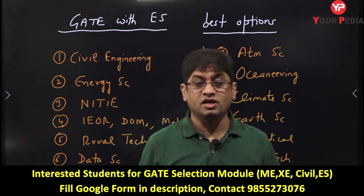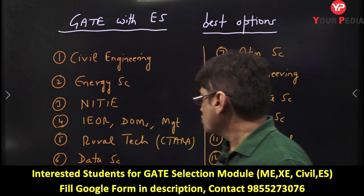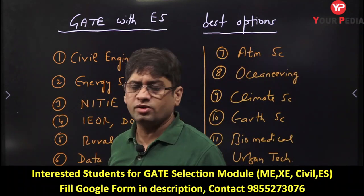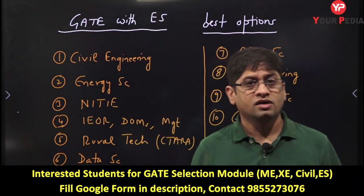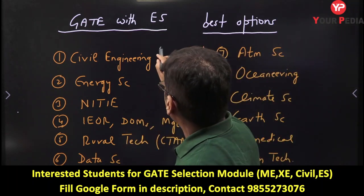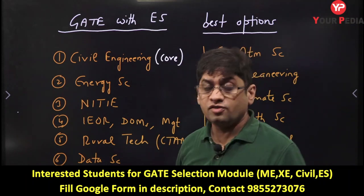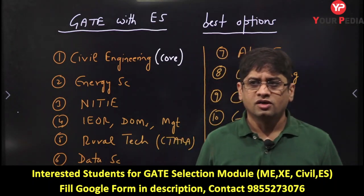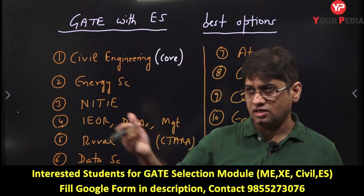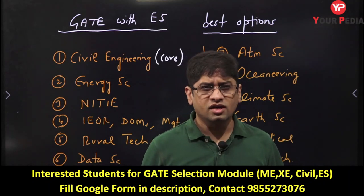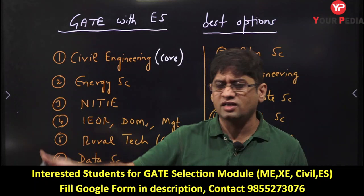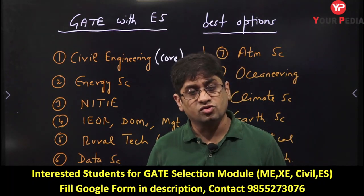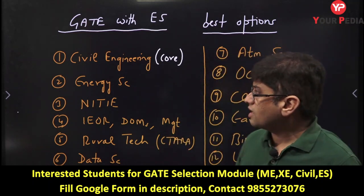In this video I will tell you the various courses you can target with an Environment Science score. Civil engineering is an obvious option — you can go for structures, geotech, or environment. Students ask whether they can get into the core civil engineering domain with Environment Science, and the answer is yes. Even with a low GATE score of around 380–390 in Environment Science, you can get into main IITs for MS and PhD programs.